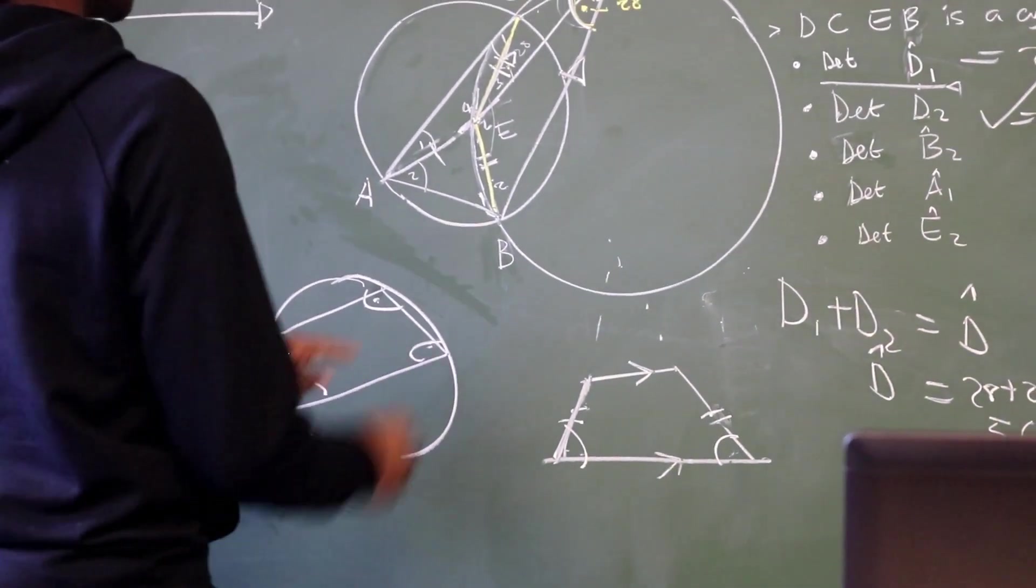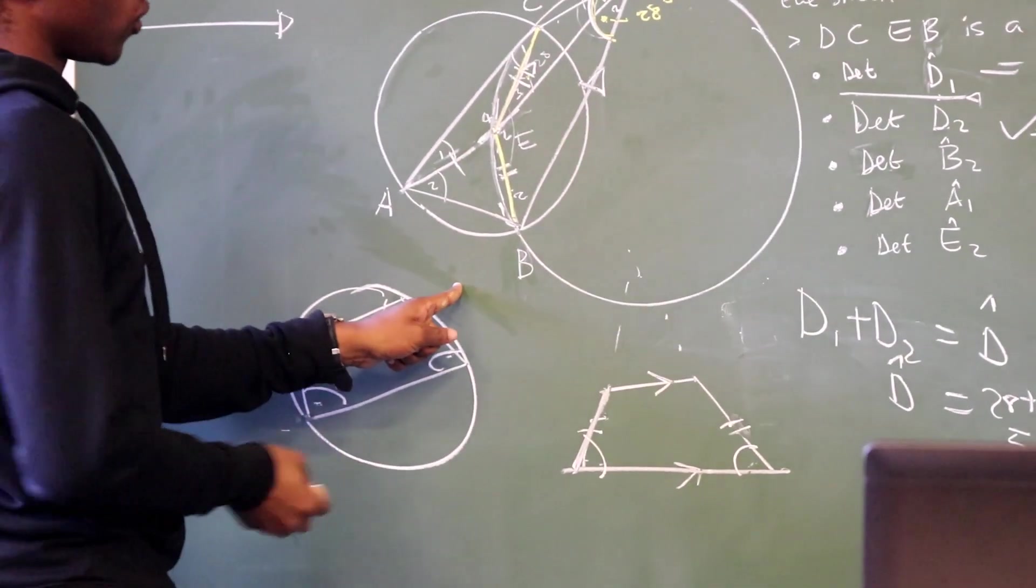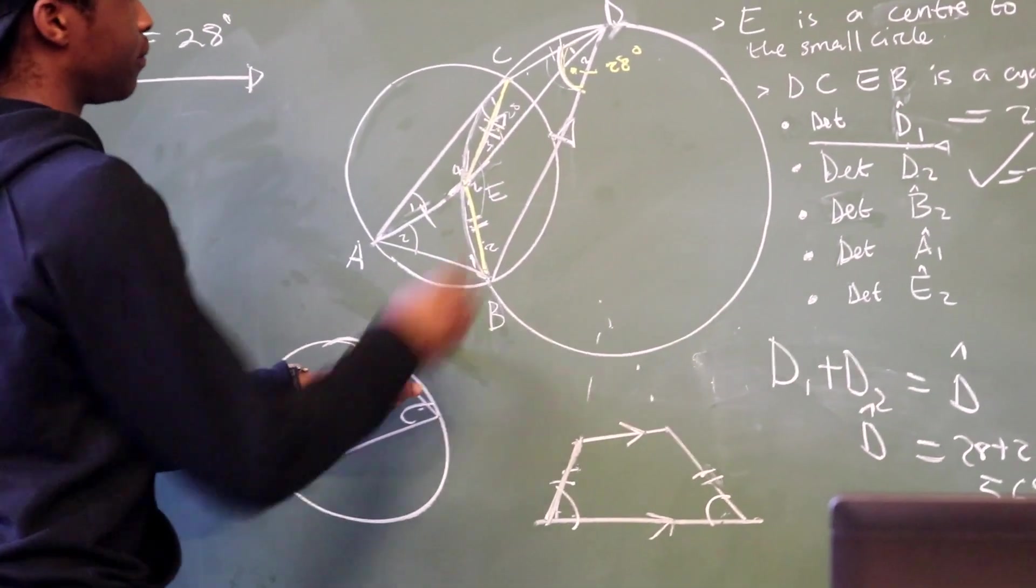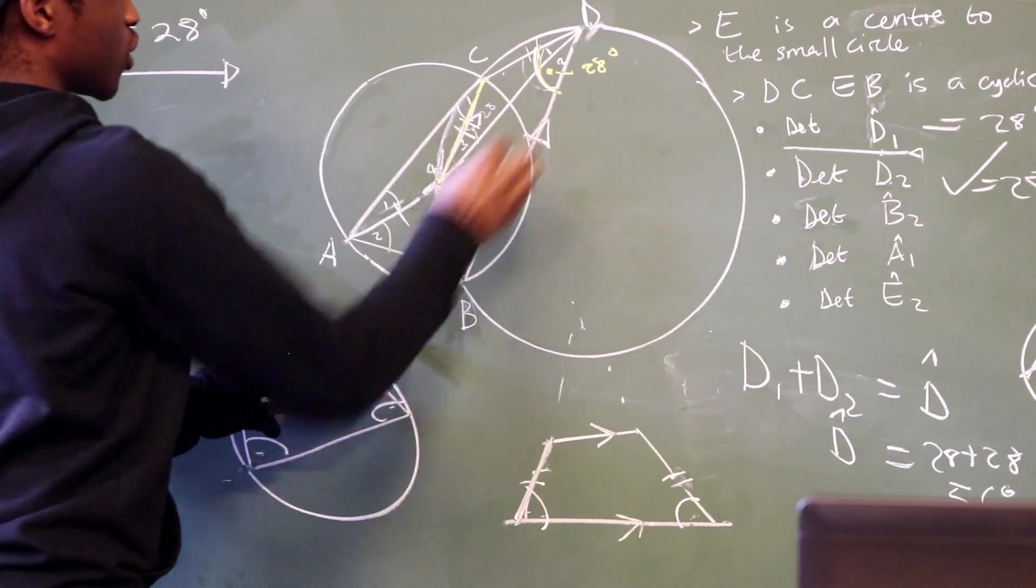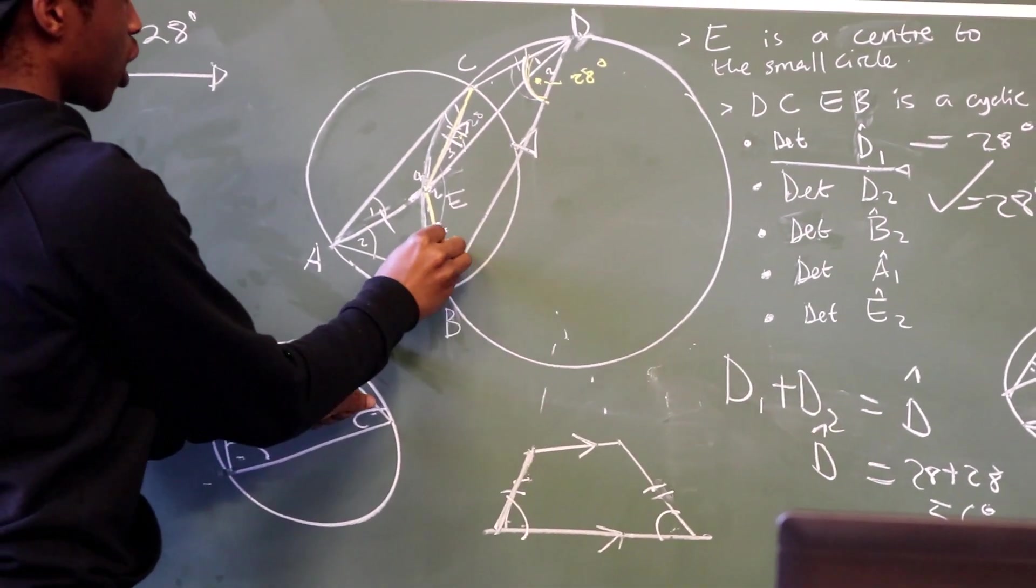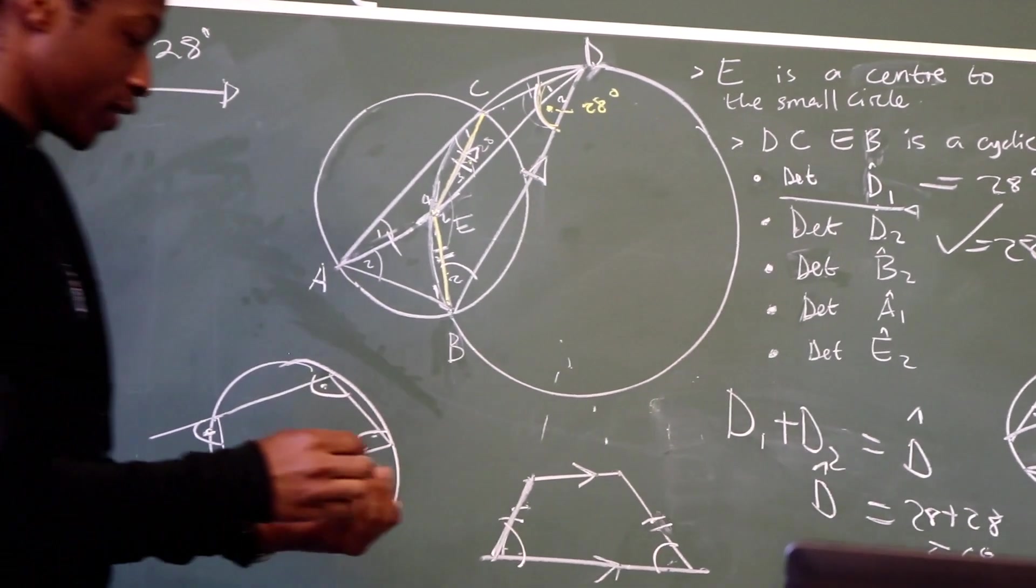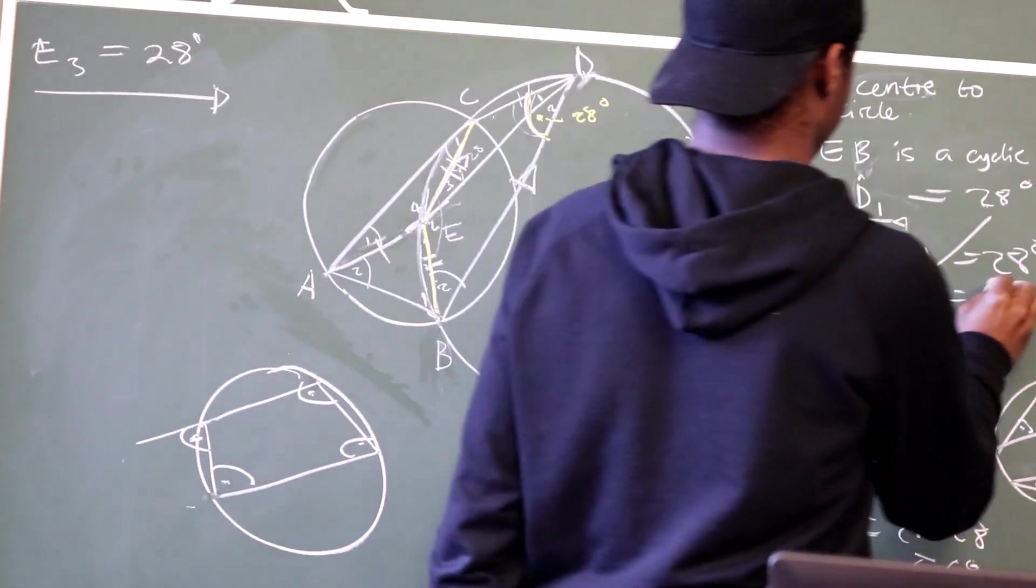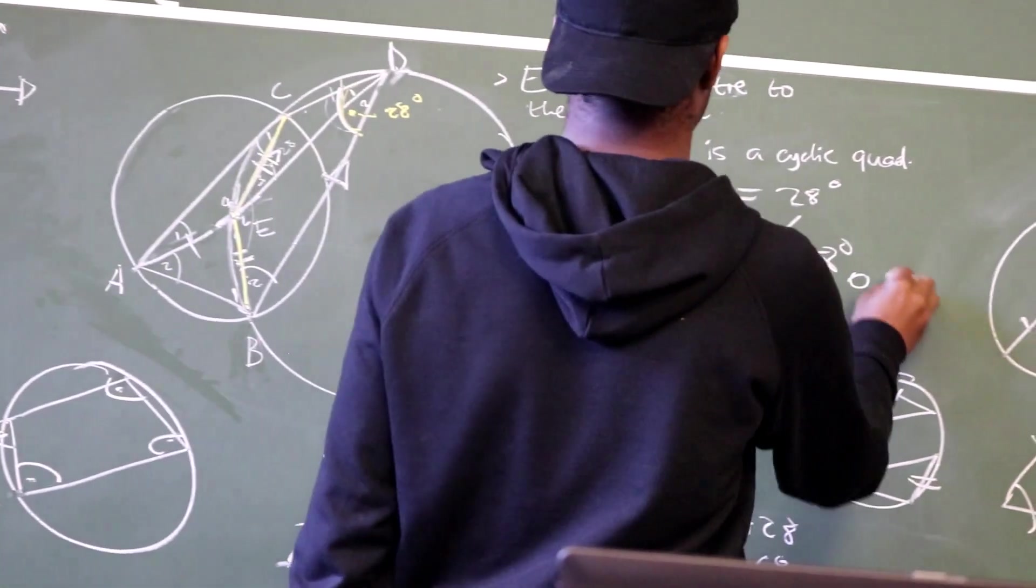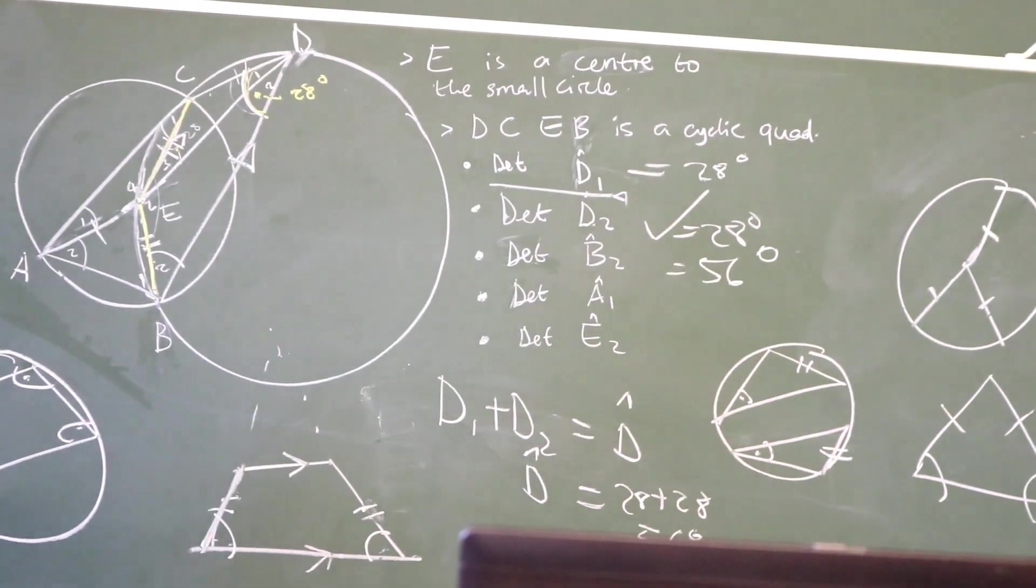The two lines are equal and we are going to have the base angles equal in a way that if we can subtract this, it can form an isosceles triangle. Now, we can deduce it from what we have done here. D is equal to 56 degrees, meaning B2 will also be equal to 56 degrees.